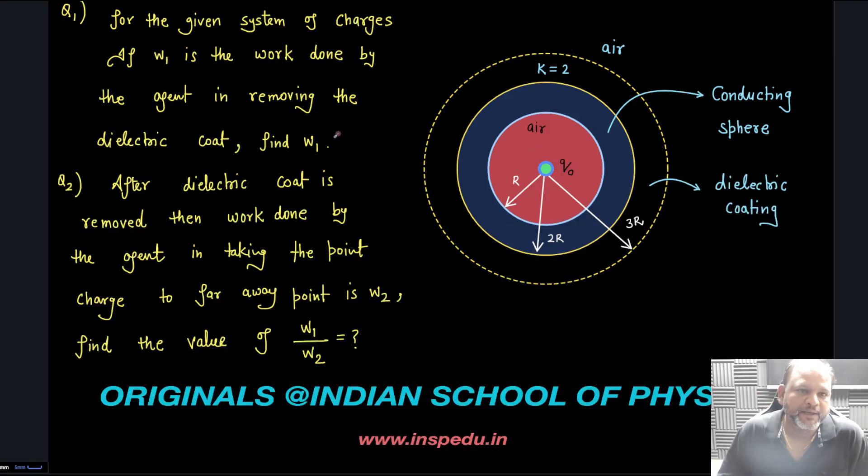If W1 is the work done by the agent in removing the dielectric coat, that means this entire part you are removing from this system. After dielectric coat is removed, the work done by the agent in taking the point charge to faraway point is W2. We have to find the value of W1 by W2.